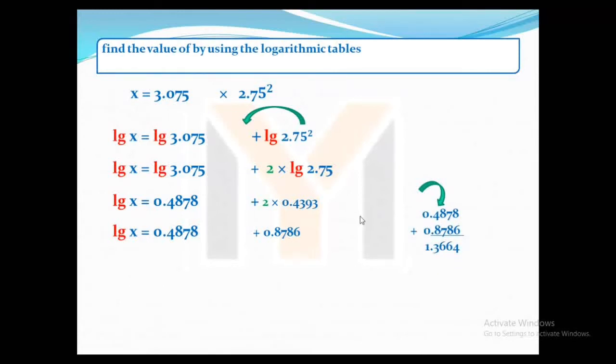Now the next step is we have to add them both. So here the addition: 8 plus 6 is 14, 1 remaining. 1, 7, 8 is 16, again 1 remaining. 1, 8, 7 is 16, again 1 remaining. 1, 4, 8 is 13, and we have to place the decimal as well. So 1 point 3664.